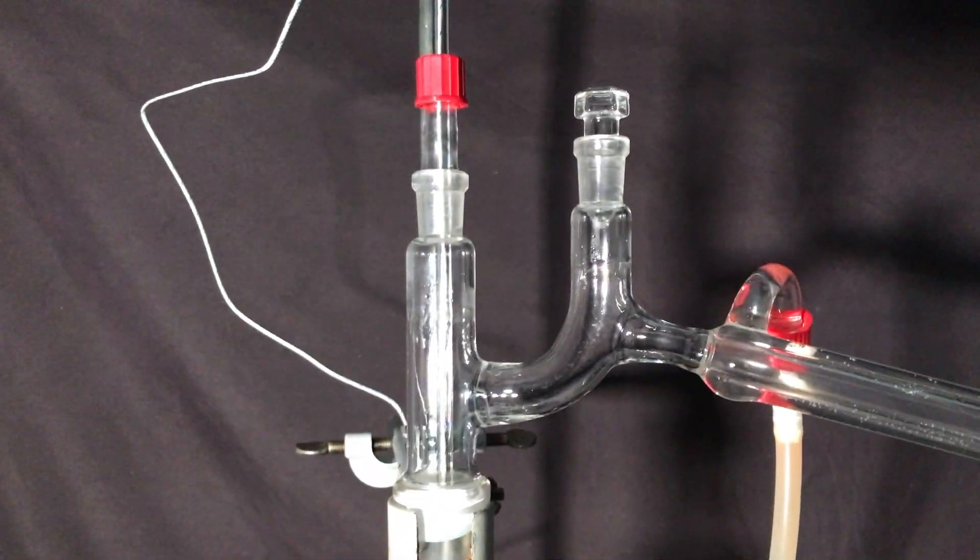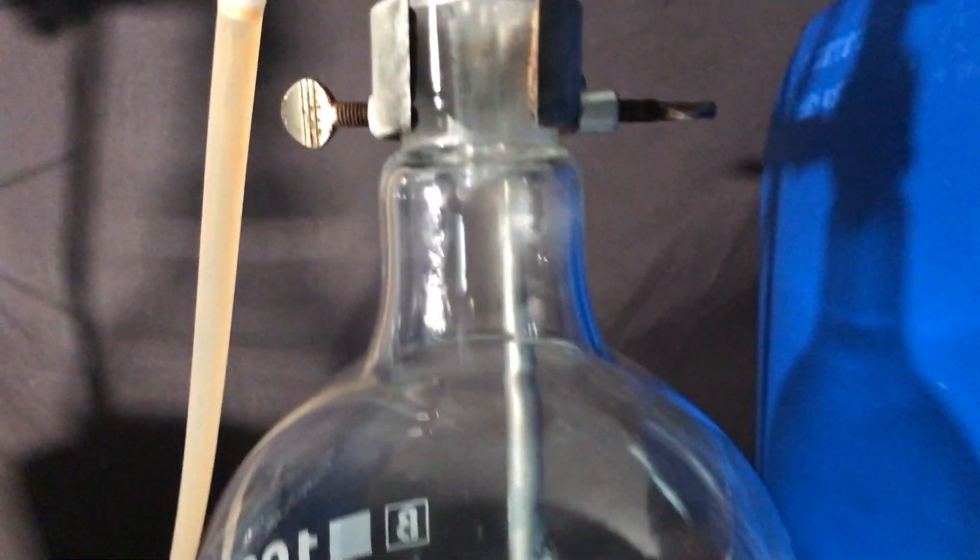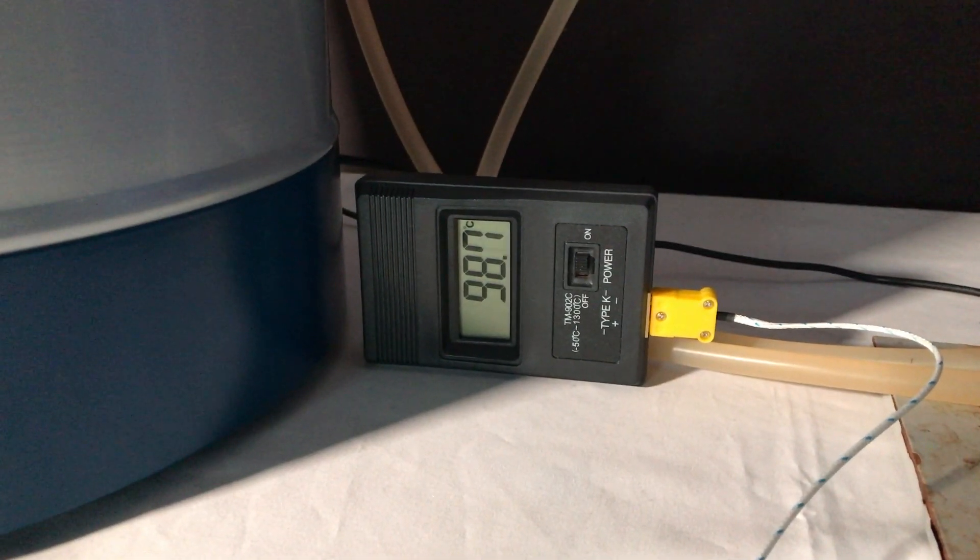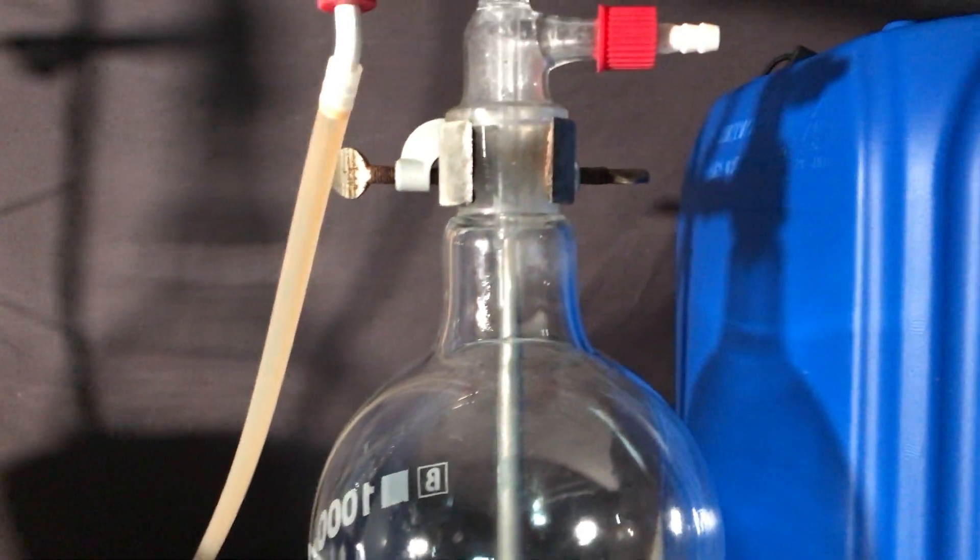I do not trust the big round-bottom flask to withstand the vacuum distillation, therefore we began by distilling off most of the benzene using a simple distillation, and the vacuum distillation will be done in a smaller flask.